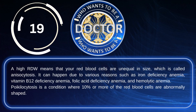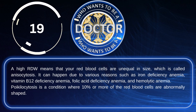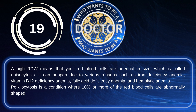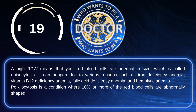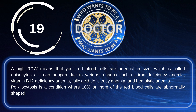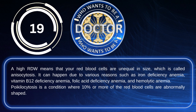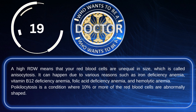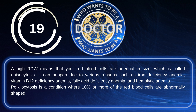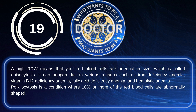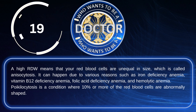A high RDW means that your red blood cells are unequal in size, which is called anisocytosis. It can happen due to various reasons such as iron deficiency anemia, vitamin B12 deficiency anemia, folic acid deficiency anemia, and hemolytic anemia.